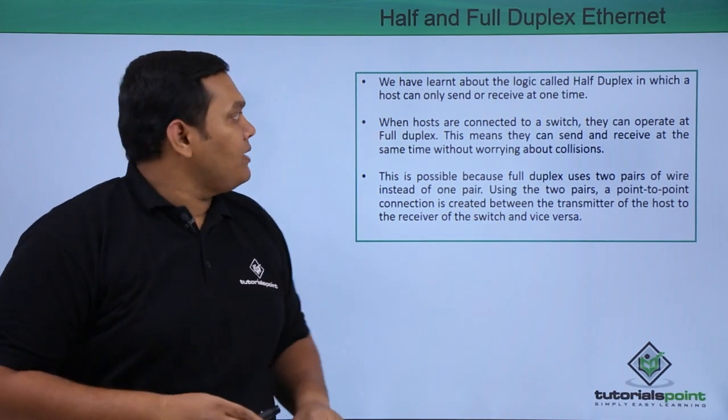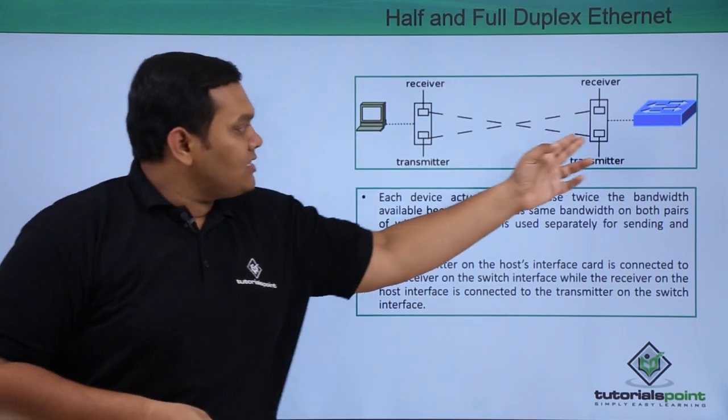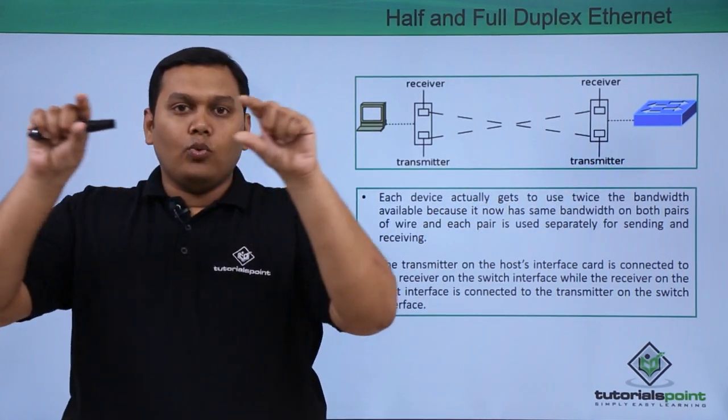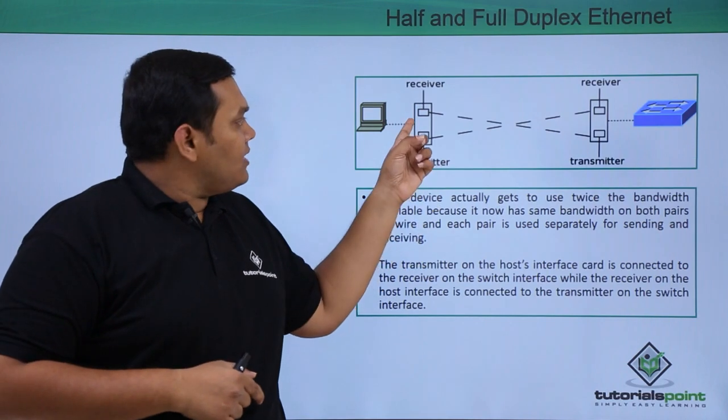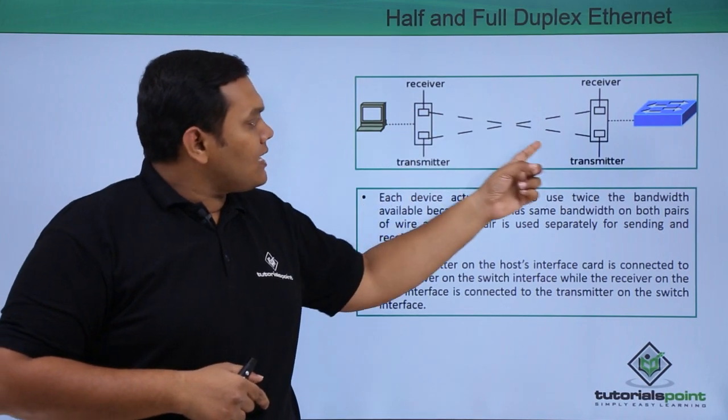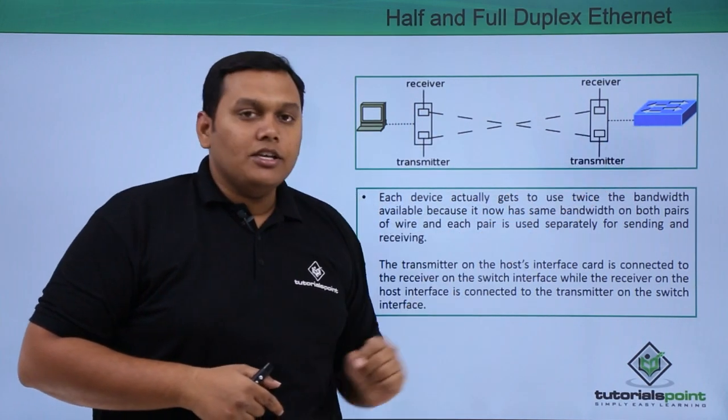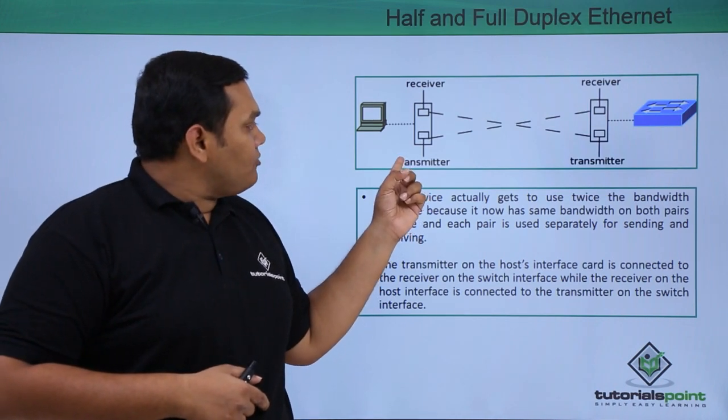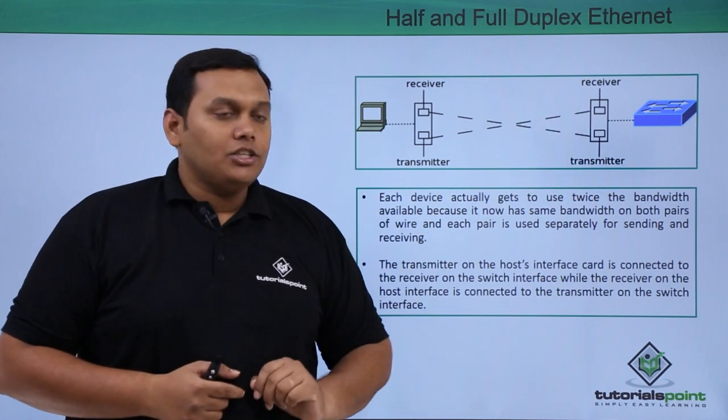You can see a best example here. This is a host and this is a switch with two wires connected. The receiver of the host is connected to the transmitter of the switch, and vice versa, the transmitter of the host is connected to the receiver of the switch.